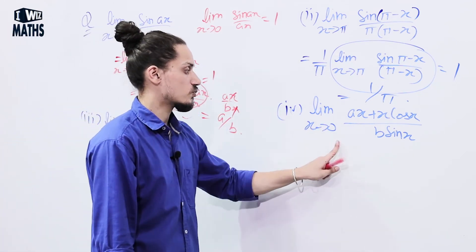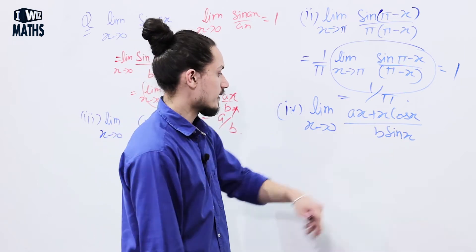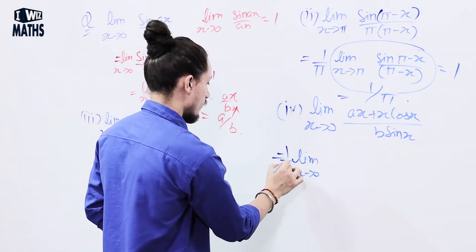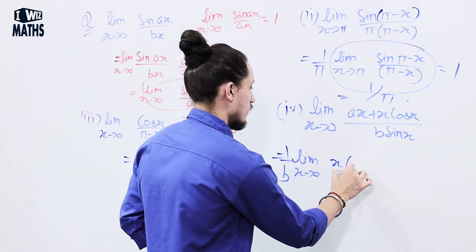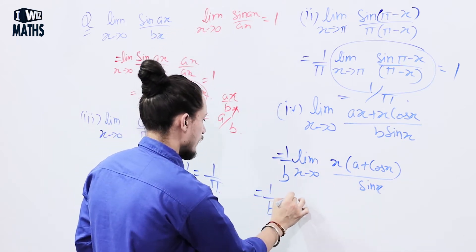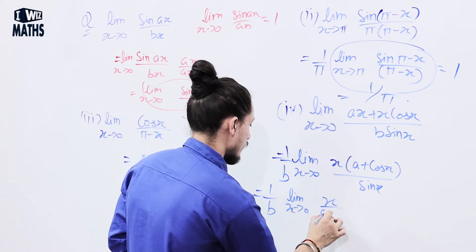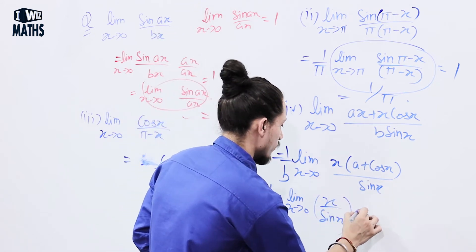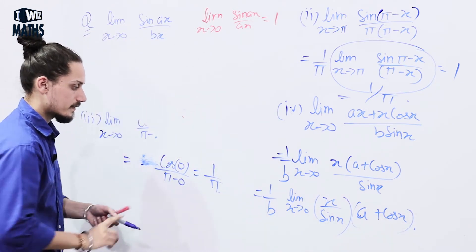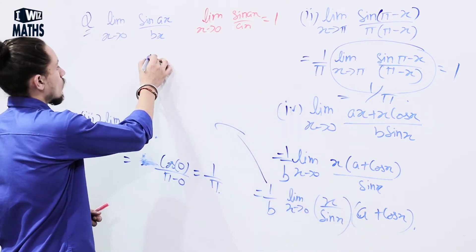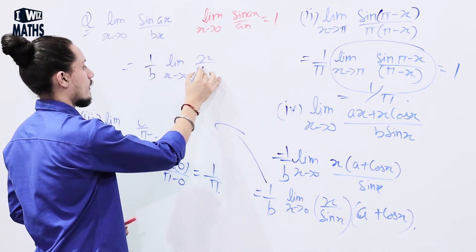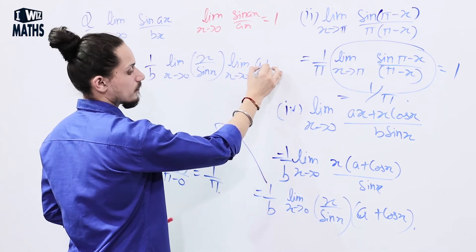Last example: lim (x → 0) of (ax + x·cos(x)) / (b·sin(x)). I can write it as (1/b) × lim (x → 0) of x(a + cos(x)) / sin(x), which is (1/b) × lim (x → 0) of [x / sin(x)] × (a + cos(x)). Separating the limits: (1/b) × lim [x/sin(x)] × lim (a + cos(x)).